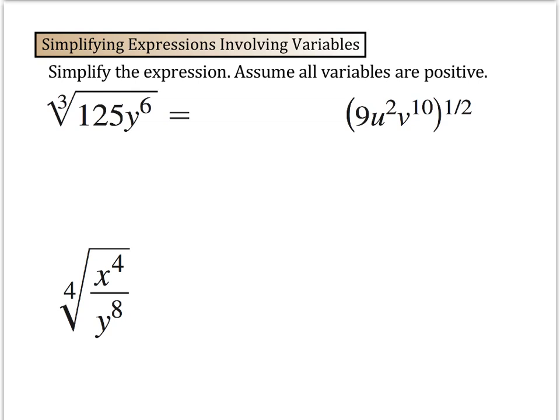Sometimes you need to simplify expressions involving variables. To simplify these, we have to assume that all the variables are positive. But the first step for these you want to do is rewrite them in a way that's easier for you to understand. For this first example here, I have 125y to the 6th and what I want to do is I want to rewrite this in exponent notation.